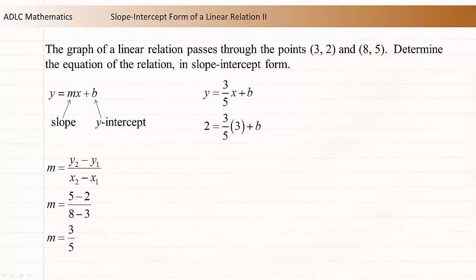Substitute 3 for x and 2 for y. 3/5 times 3 is 9/5. Subtract 9/5 from each side of the equation to isolate b. On the right side of the equation, the two 9/5 terms reduce and we're left with 2 - 9/5 = b.